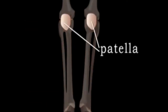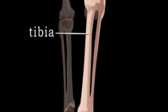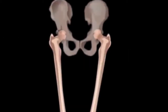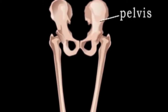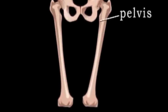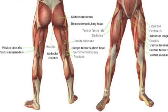My femur and patella in the upper leg work with the tibia and fibula in the lower leg to support my body throughout this process. The pelvic bones above my legs also support my upper body and are connected to my bone muscles through tendons, which allow my entire body to run.